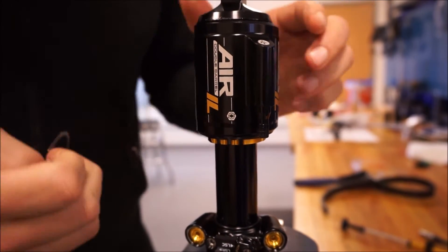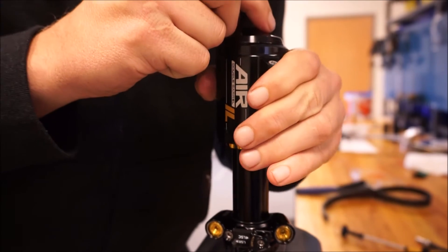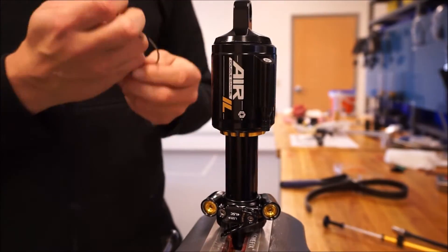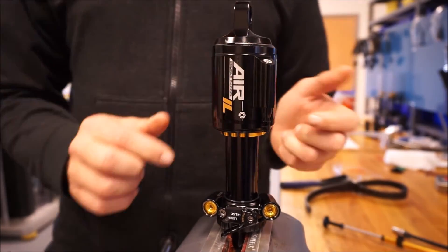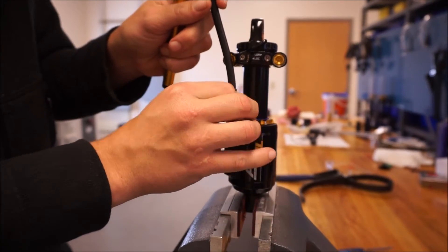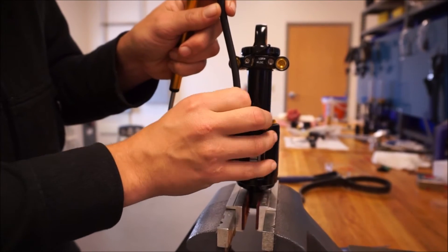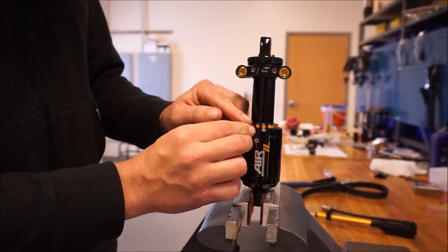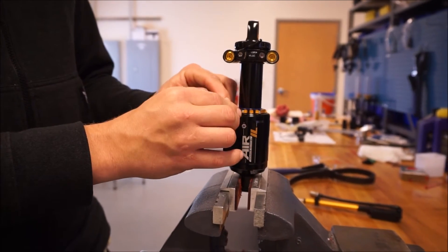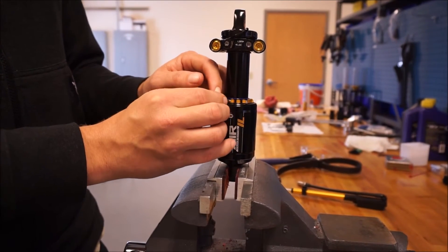Next thing you do is return your shock to clocking, reseat your circlip, screw your shock pump back on, re-inflate, and return the air cap, and reinstall on the bike.